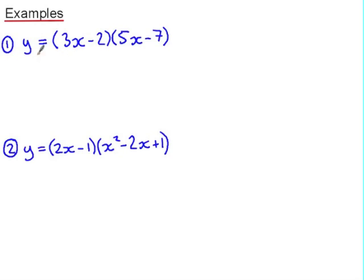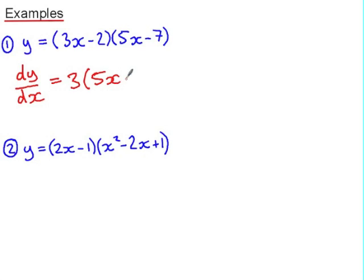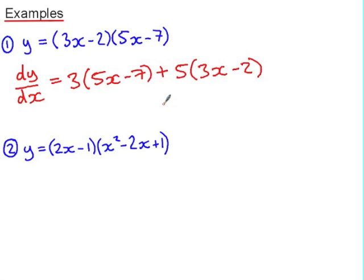In example number one, y is expressed as the product of two linear functions. So we can say u is 3x take 2 and v is 5x take 7. To differentiate y with respect to x, it's the derivative of the first multiplied by the second, plus the derivative of the second multiplied by the first. We could expand these brackets, collect like terms and simplify, but we're really just interested in seeing the product rule in action at this stage, so we'll leave that as it is.